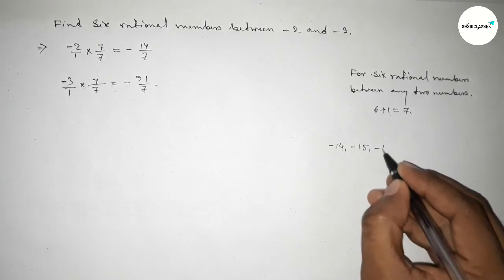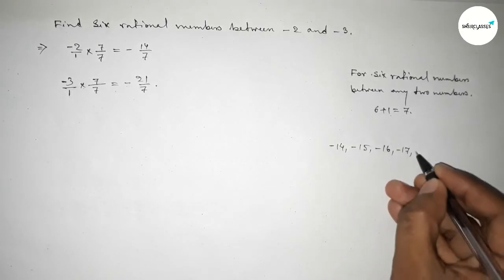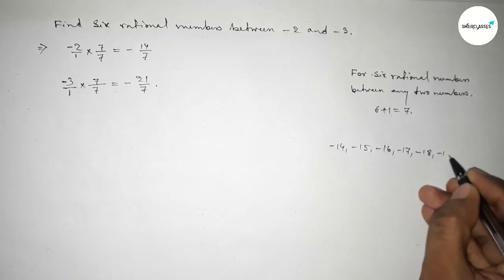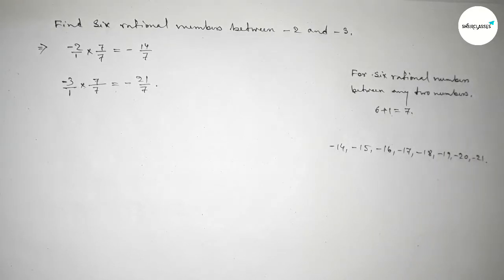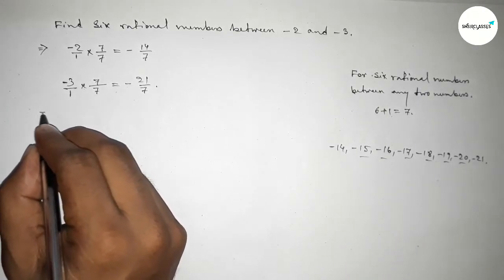So here write down all the negative integers and these are the required six negative integers.